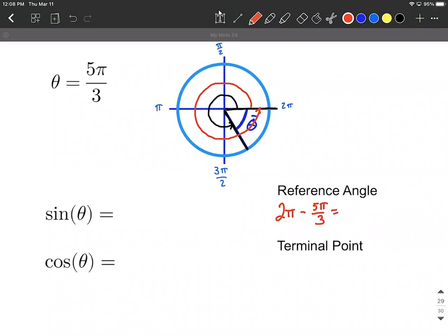So to write this with a common denominator, I'm going to think of these as both being fractions, and I'm going to be multiplying two pi by three over three to get that common denominator. So six pi over three minus five pi over three is going to be pi over three. So our reference angle, theta bar in our case, is pi over three.